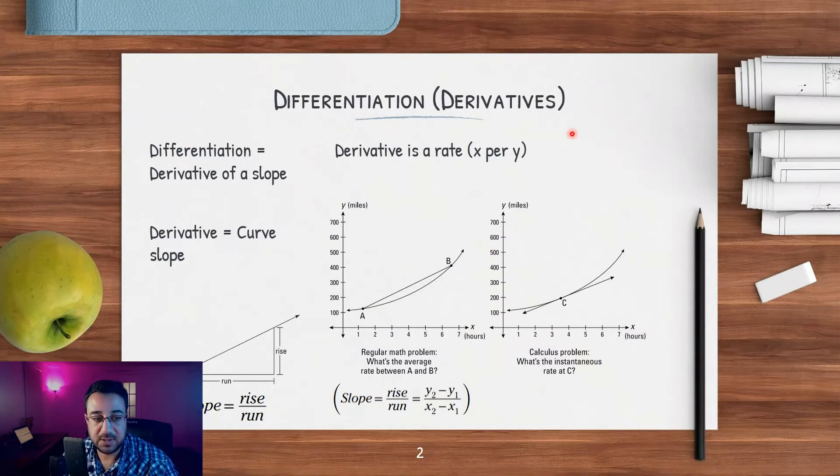...the derivative of a slope. If you go back to the example of the box, the guy who's pushing the box up the hill - when you have a slope that has a curvature, you're using differentiation to capture the rate of change.